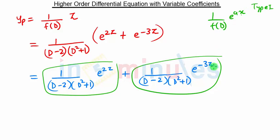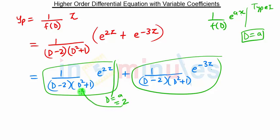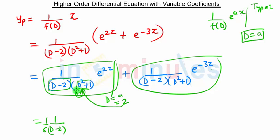For Type 1, we replace D by a. For the first term, a is 2, so we replace D equal to 2. We cannot replace for the (D minus 2) term because it creates a problem, so we keep 1 upon (D minus 2) as it is. For the remaining part, D squared becomes 2 squared which is 4, plus 1 which is 5, giving 1 upon 5 into e raised to 2z.